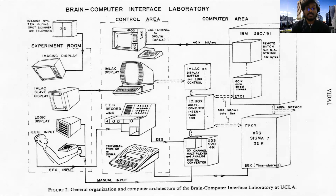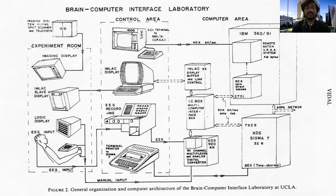On the left side he showed an experimental room where all the recording happened. In the middle, a control area housed all the devices that recorded EEG and other information. Then there was a computer area to communicate, store, and process those signals coming from the experiment room to the control area. You can see this whole setup is quite large, where the brain-computer interface could be developed.